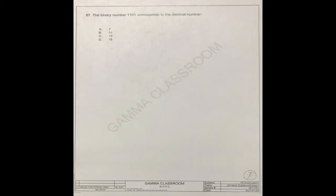Question number 87. The binary number 1, 1, 0, 1 corresponds to the decimal number. For what number?